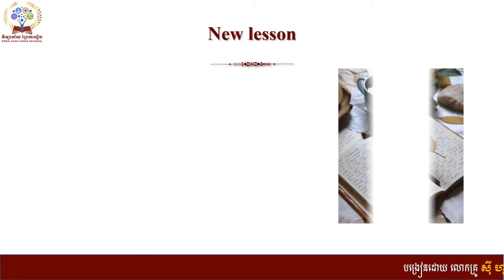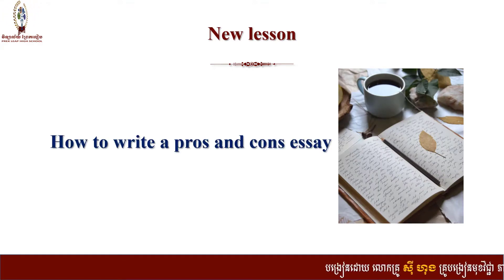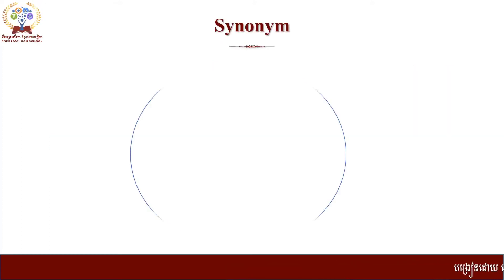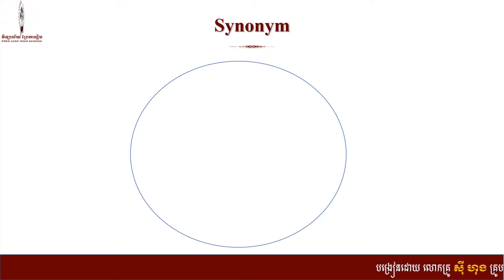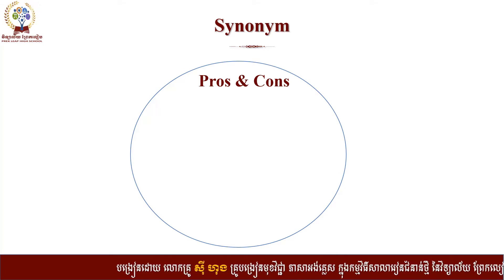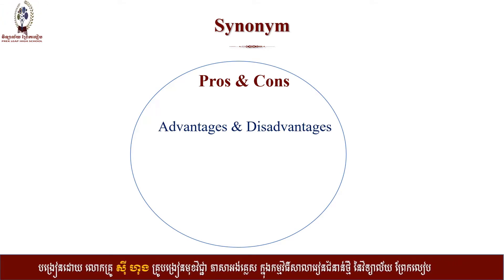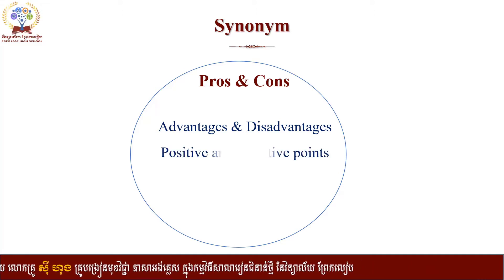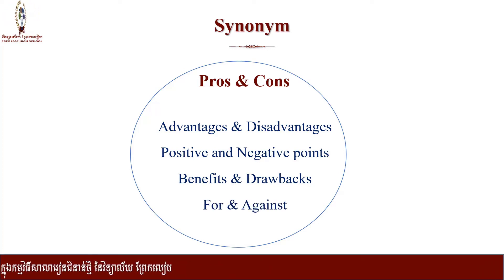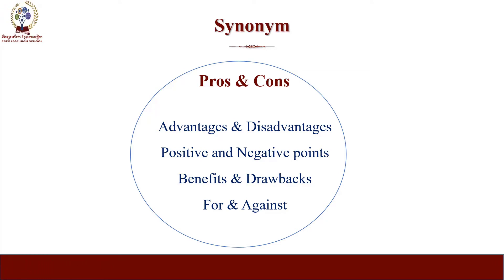Now let's go to today's lesson. It is about how to write a pros and cons essay. What are the other words for pros and cons? We have: advantages and disadvantages, positive and negative points, benefits and drawbacks, and also good and bad points, strengths and weaknesses.